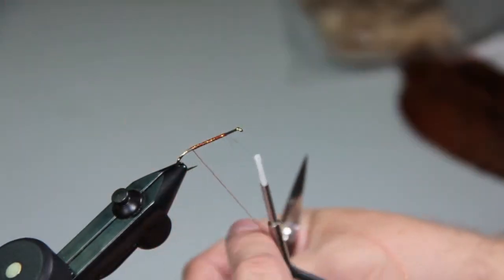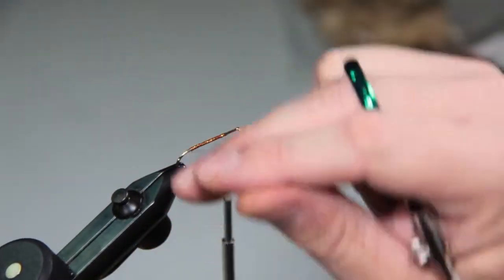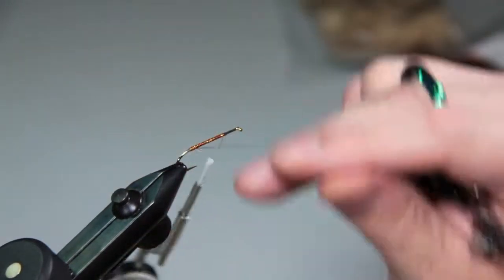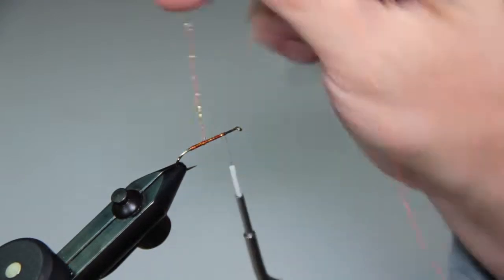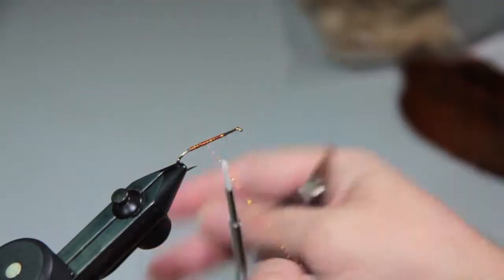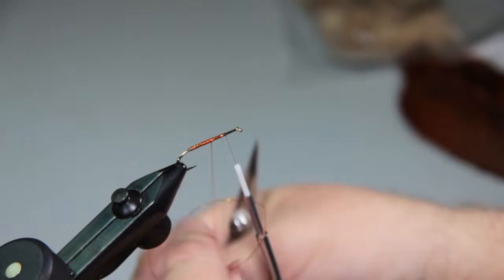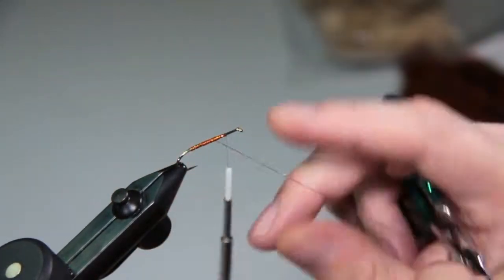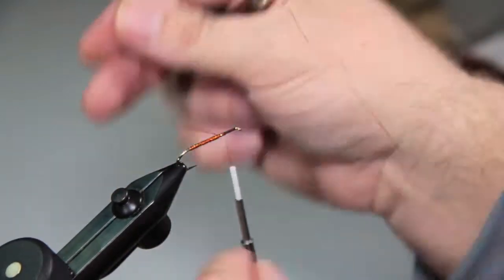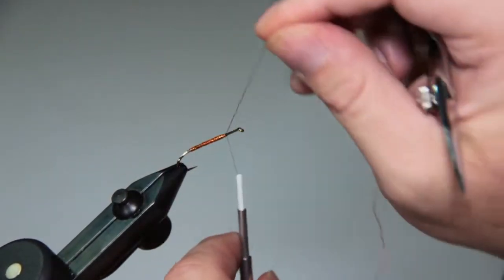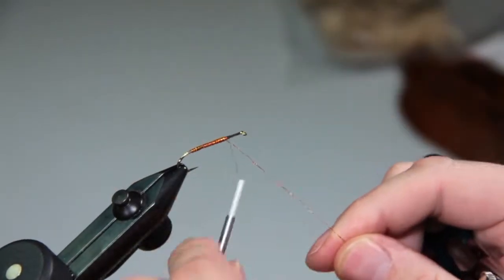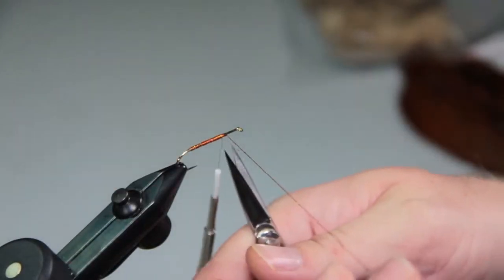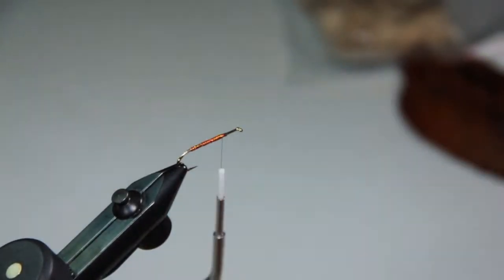I'm going to go over that mylar tag. Just a couple of turns. You'll notice as I advance forward I'll put a couple wraps back over it. And this just builds an ever so slight taper to the body. It's going to be in two stages.